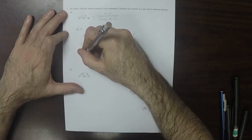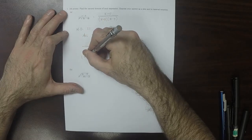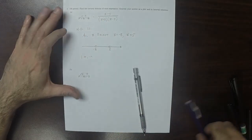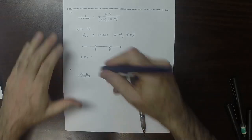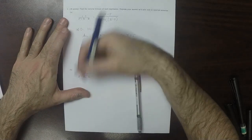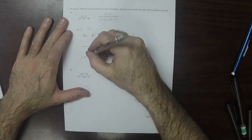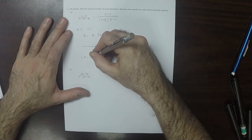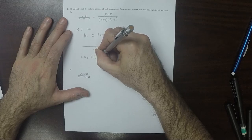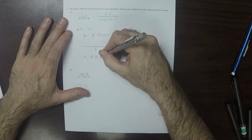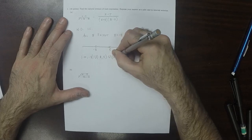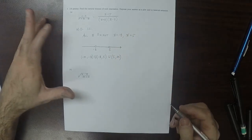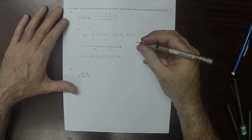And when written in interval notation, that's negative infinity to negative 8, union negative 8 to 5, union 5 to infinity. So that's the answer.